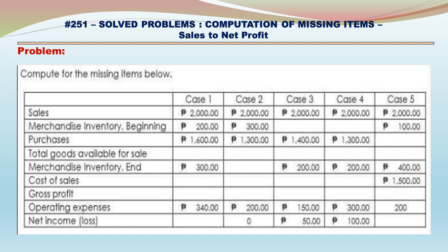Case 3: Merchandise Inventory Beginning is missing. Purchases – 1,400. Total Goods Available for Sale is missing. Merchandise Inventory Ending – 100. Cost of Sales and Gross Profit are missing. Operating Expenses – 150. Net Income/Loss – 50.